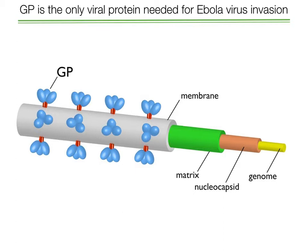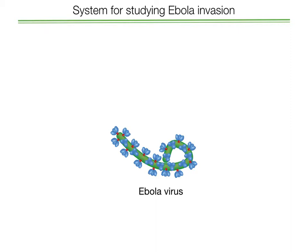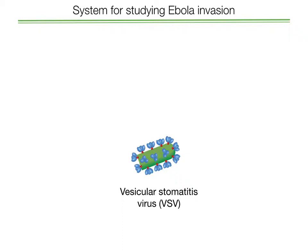So how do we actually study the Ebola invasion process? As many of you know, Ebola is a highly lethal virus that can only be worked with in a high biocontainment lab, where researchers wear special biohazard suits. The way we get around this problem is we take advantage of the fact that GP is a modular protein, and it's able to do its job in a completely different context than the intact Ebola virus particle. We use a completely different virus — vesicular stomatitis virus, or VSV — to study the Ebola invasion pathway.